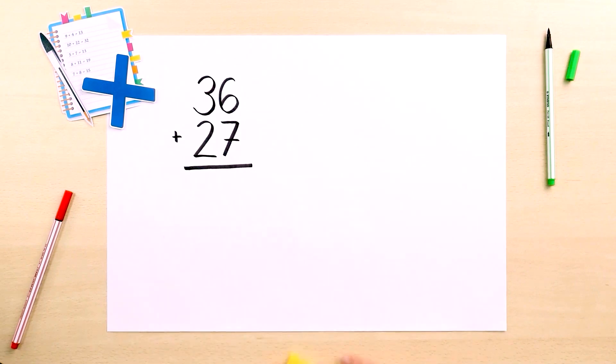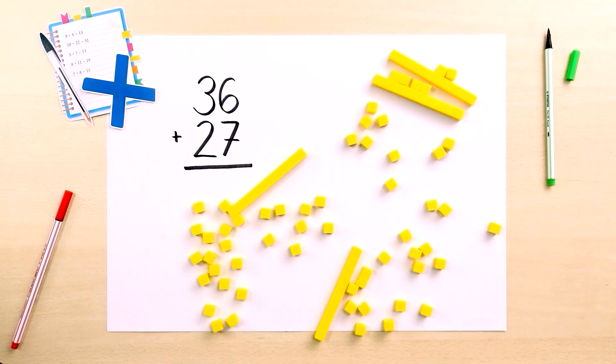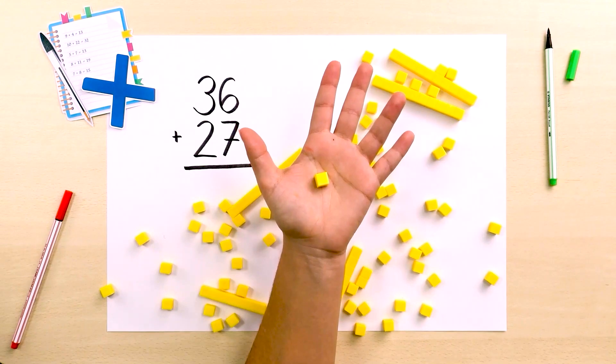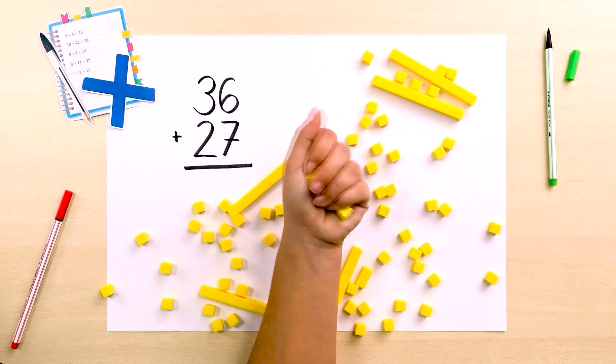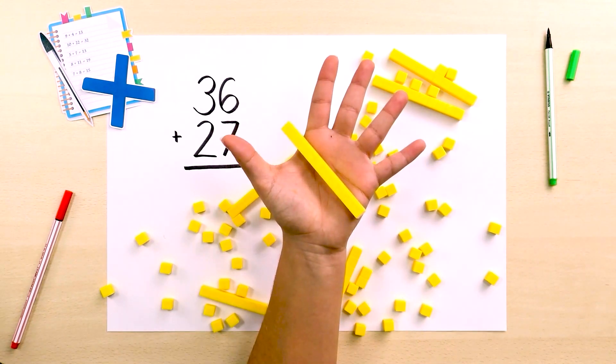To solve this, we can represent these numbers using materials, such as the base 10 blocks. The cubes represent the units, and 10 of them join to form a bar that represents a 10.